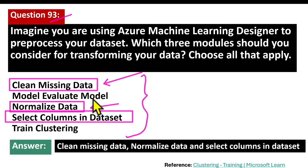Normalized data is a module used to adjust the values of numeric columns in a dataset to a common scale without distorting differences in the range of values. This is crucial for ensuring that the features in a dataset contribute equally to the model.